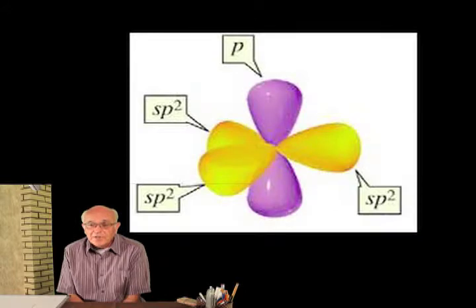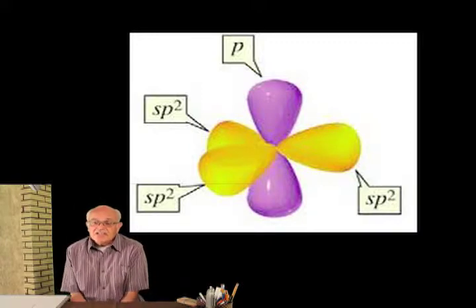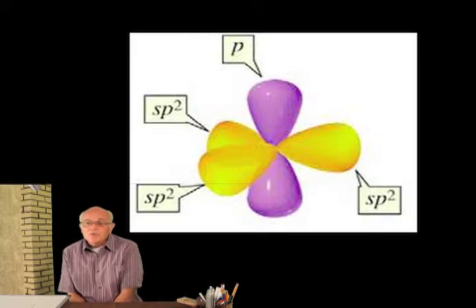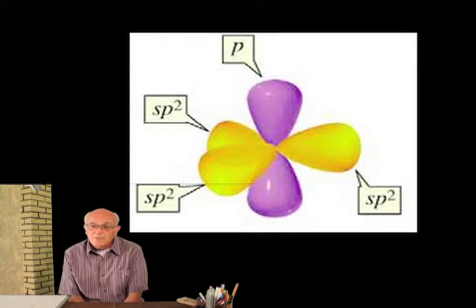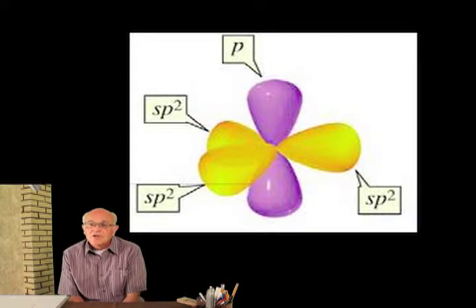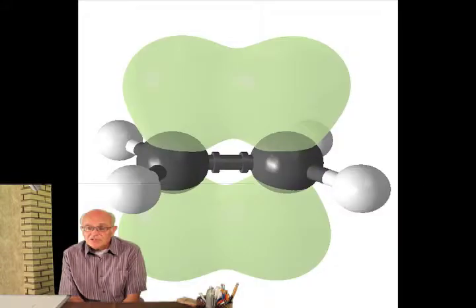Sometimes carbon forms bonds with only three other things, and then the fourth valence electron sticks through the carbon atom and makes a cloud on the top and the bottom, pushing the three bonds out into a flat plane. When there are two carbons next to each other with this configuration...